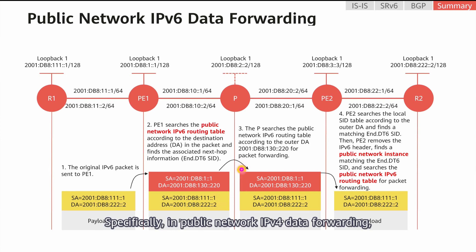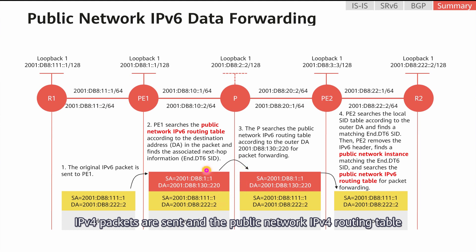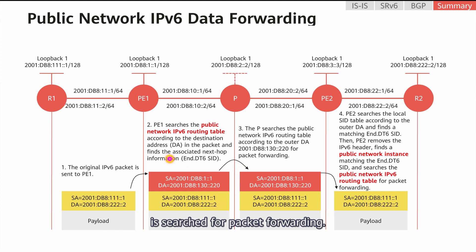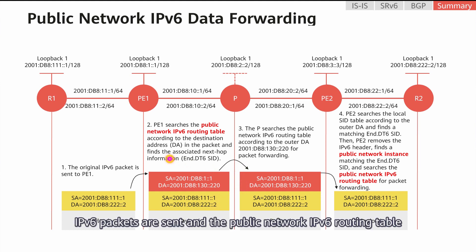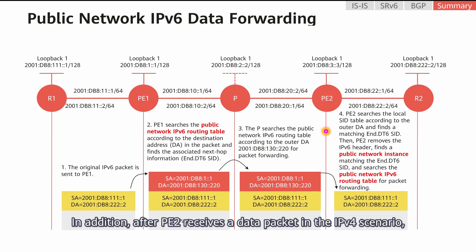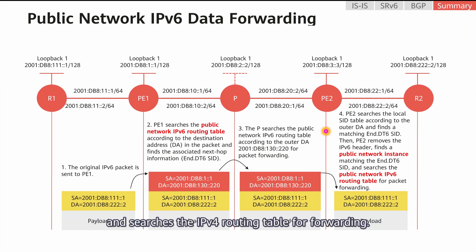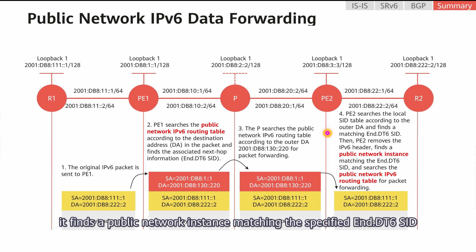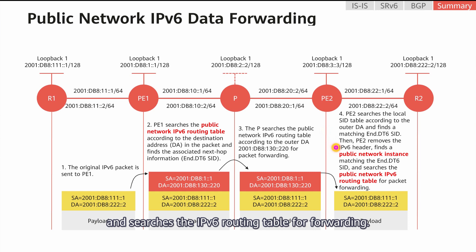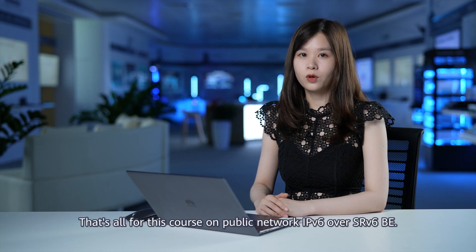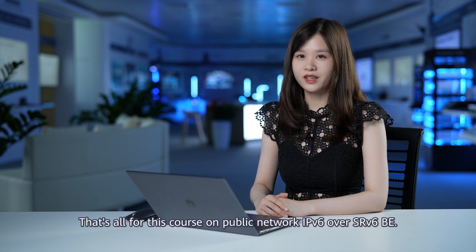Although public network IPv6 data forwarding is similar to public network IPv4 data forwarding, there are some differences. In public network IPv4 data forwarding, IPv4 packets are sent and the public network IPv4 routing table is searched for packet forwarding. After PE2 receives a data packet in the IPv4 scenario, it finds a public network instance matching the specified N.DT4 SID and searches the IPv4 routing table for forwarding. In the IPv6 scenario, however, it finds a public network instance matching the specified N.DT6 SID and searches the IPv6 routing table for forwarding. That's all for this course on public network IPv6 over SRV6 BE. Thank you for watching.